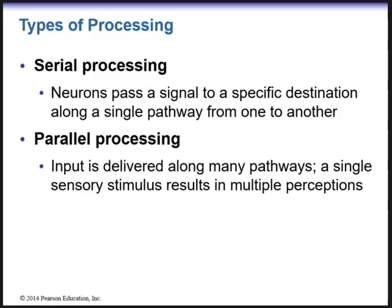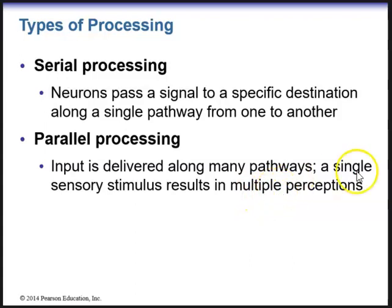There are different types of processing — two, actually. We have serial processing and parallel processing. With serial processing, the neurons will pass a signal to a specific destination along a single pathway from one to another. With parallel processing, the input is delivered along many pathways, and a single sensory stimulus will result in multiple perceptions.